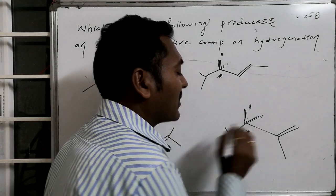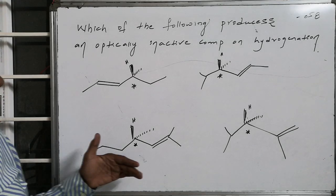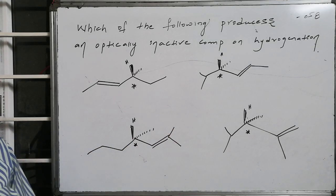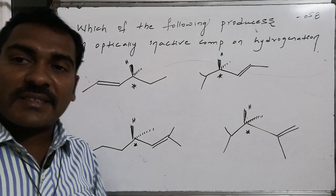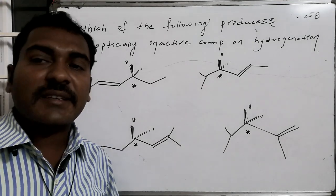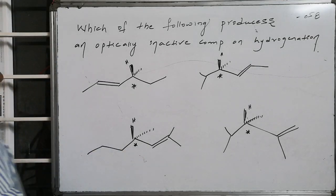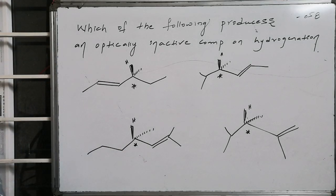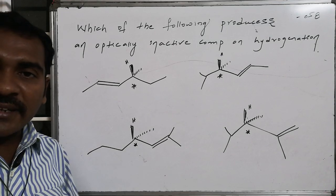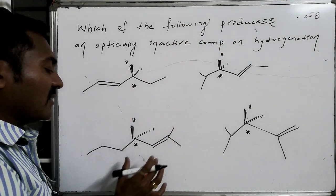All of these chiral alkenes are allowed to react with hydrogen. Hydrogenation is a cis addition, so wherever a double bond is present, hydrogen gets added in a cis fashion on the double bond.